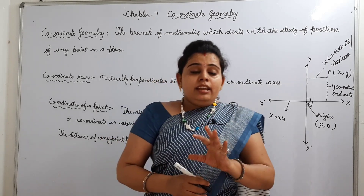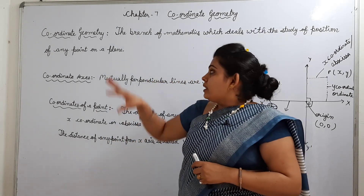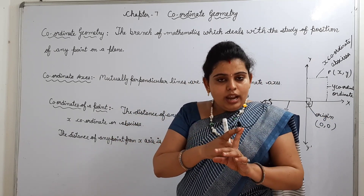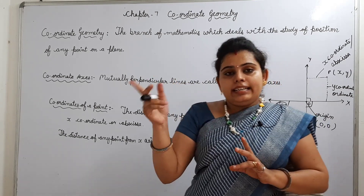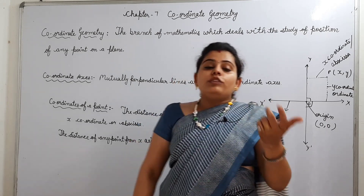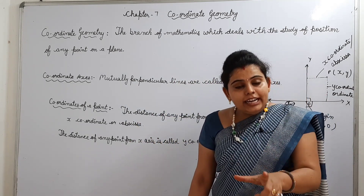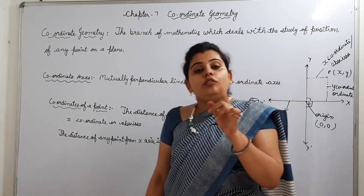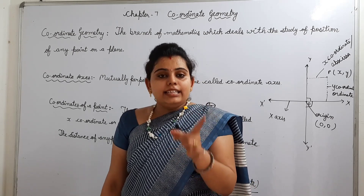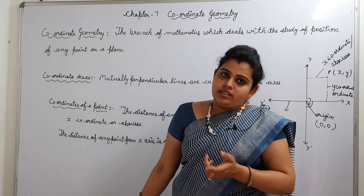Now let's see what we study in this chapter. We will study coordinate geometry as discussed. After that, the distance formula, which we study in Exercise 7.1. Section formula and midpoint formula in Exercise 7.2. And using these coordinates, we will calculate the area of a triangle in Exercise 7.3. So let's start with the distance formula first.